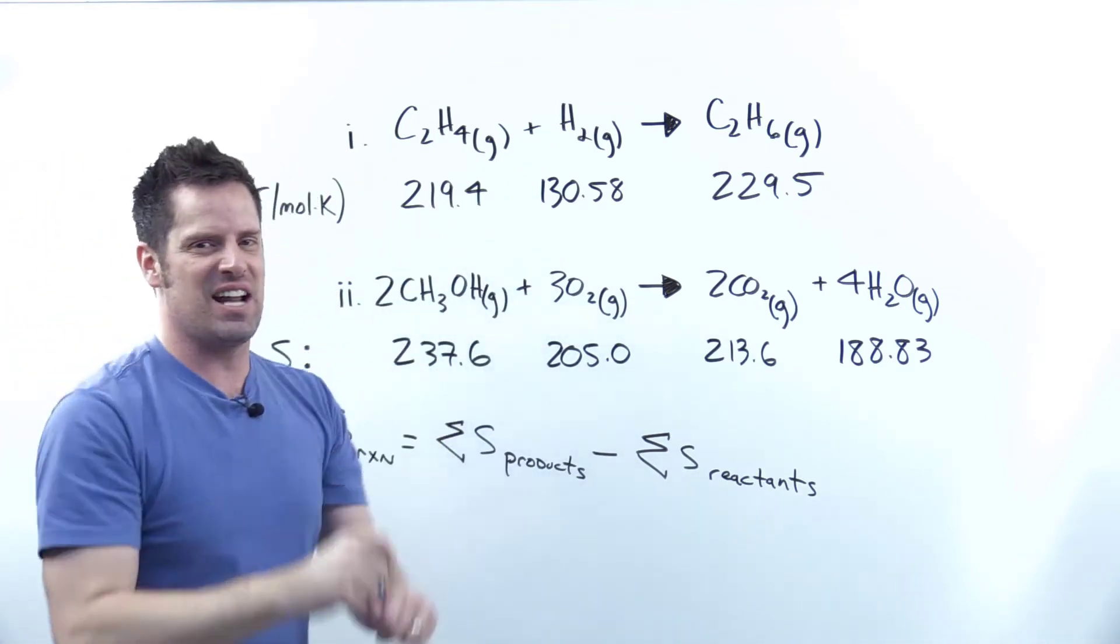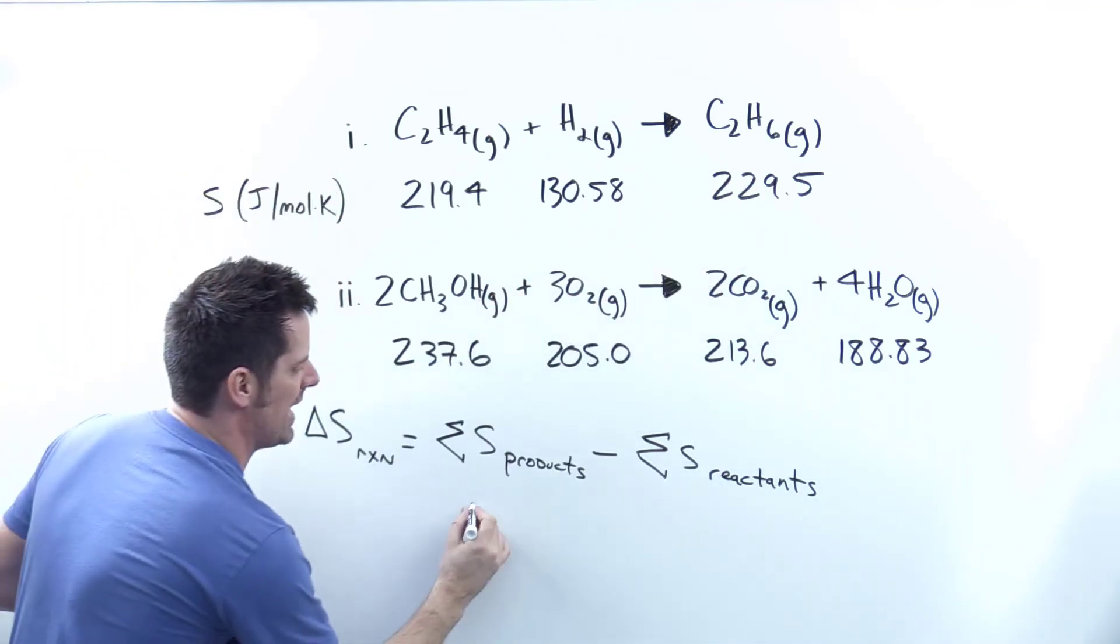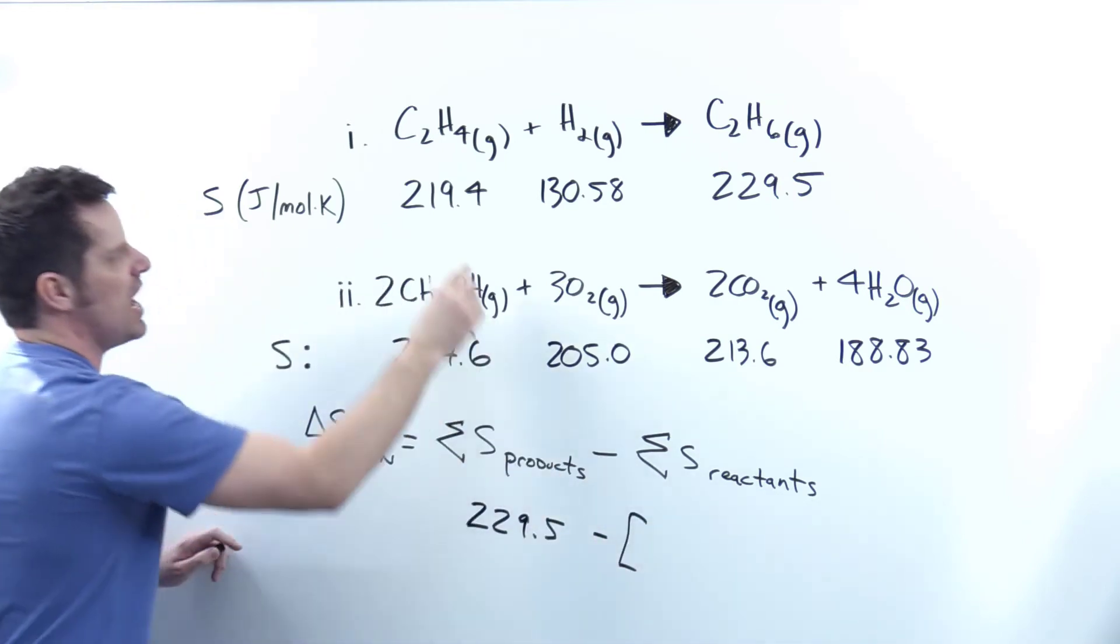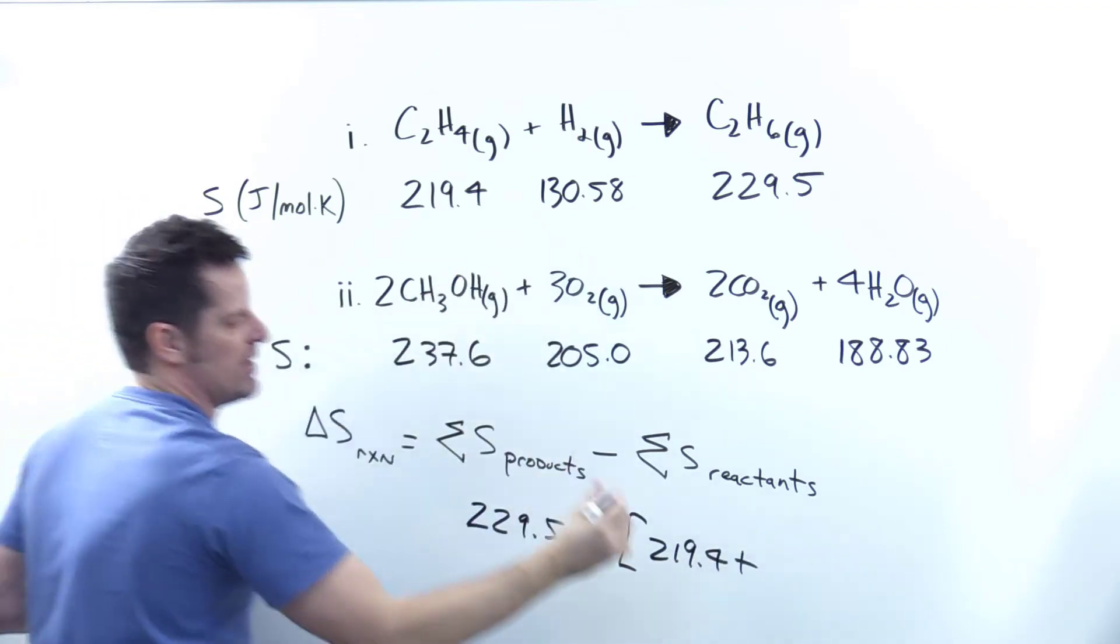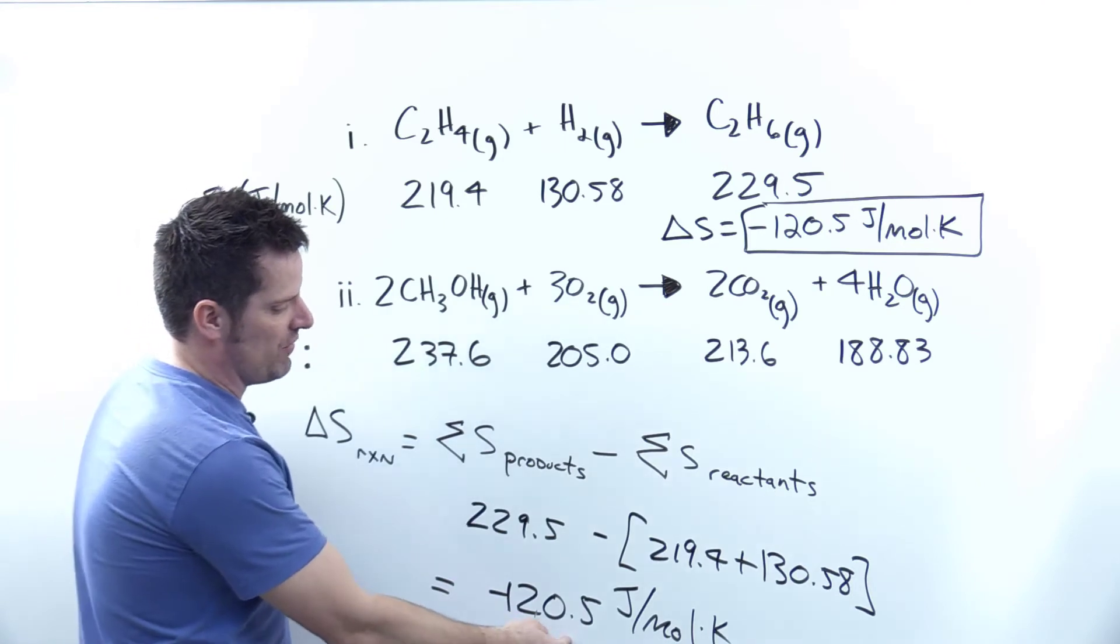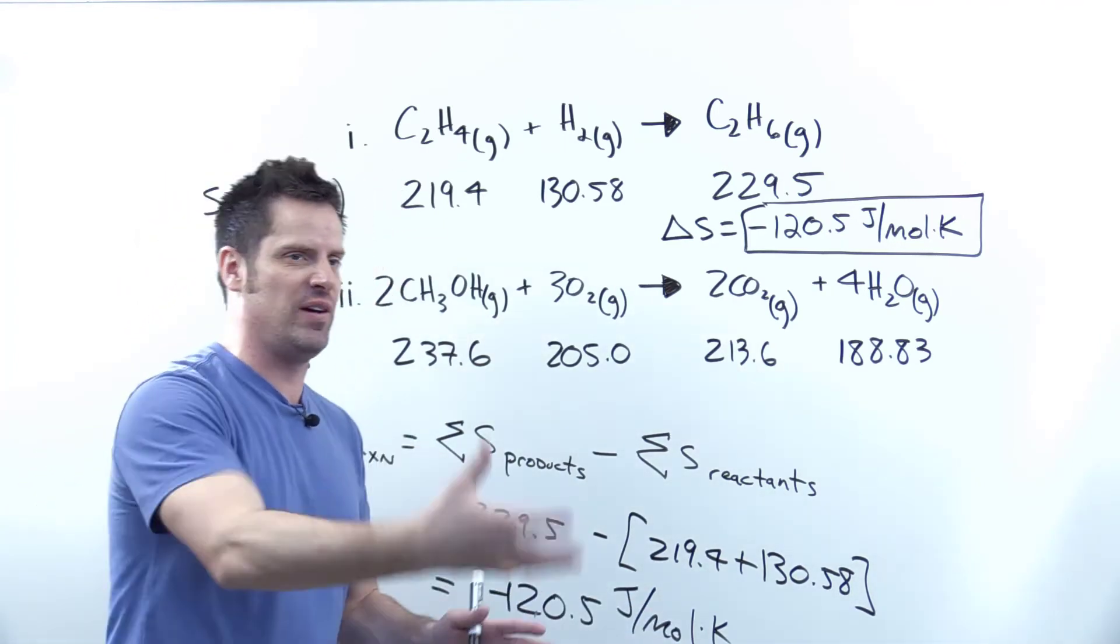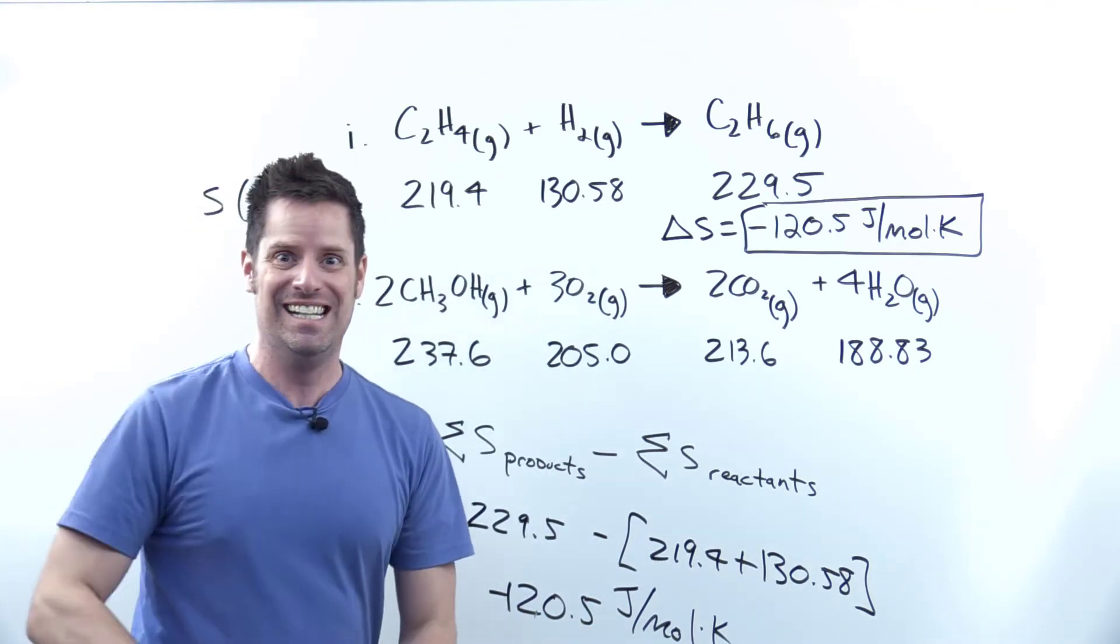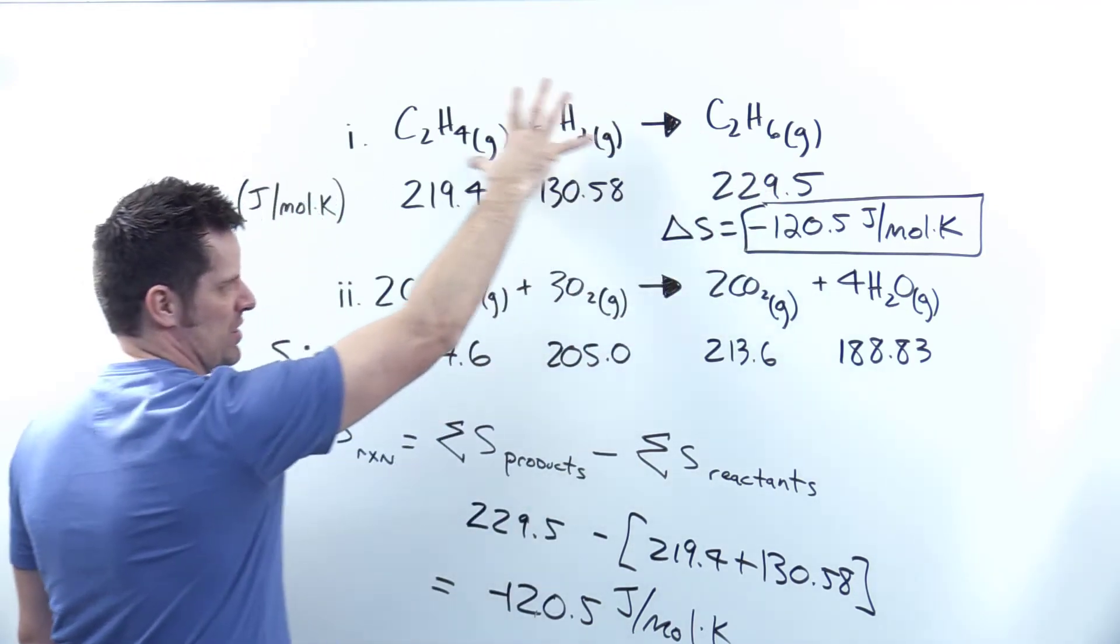With all that said, let's now do this problem. We're going to take our product, which is 229.5, and then I'm going to subtract from it the sum of these two terms, 219.4 and 130.58. When I did that, I ended up getting negative 120.5 joules per mole Kelvin. I've written that up here as the delta S for this reaction.